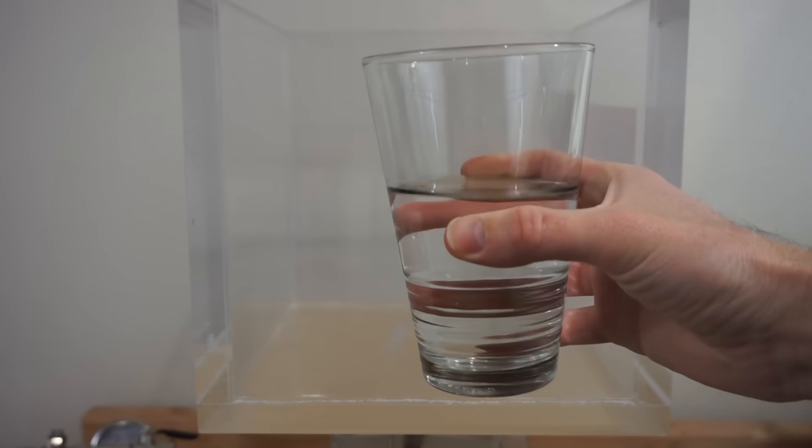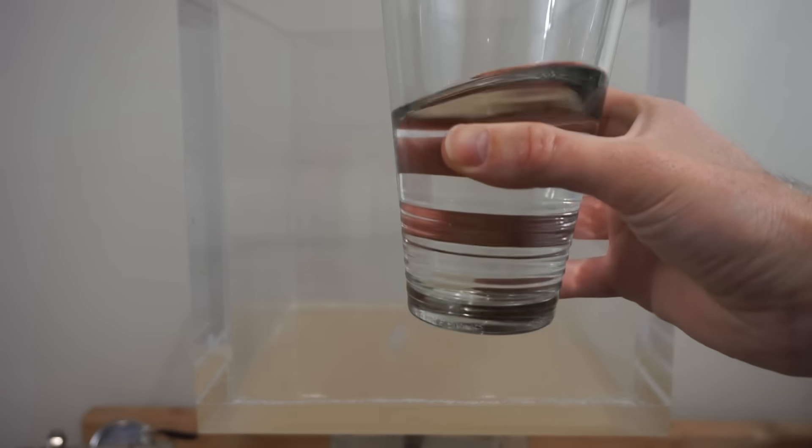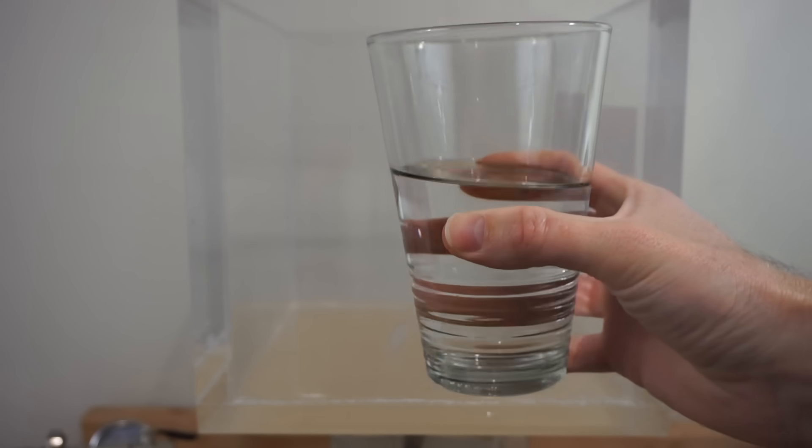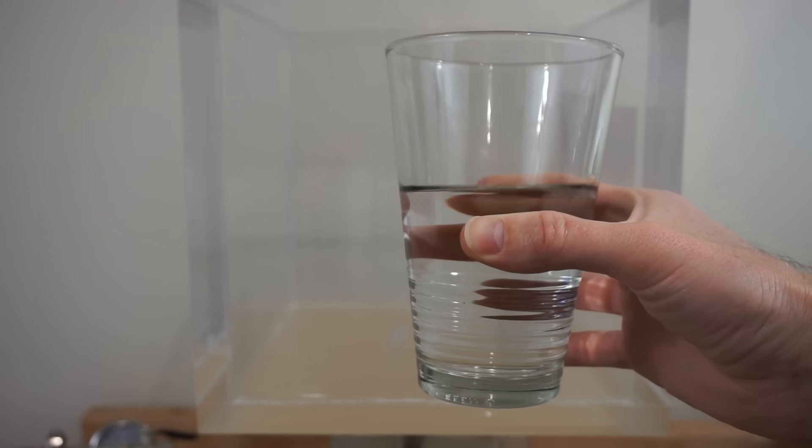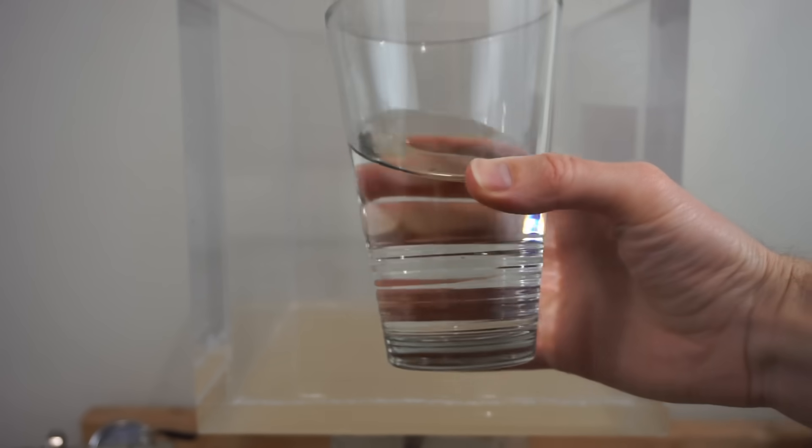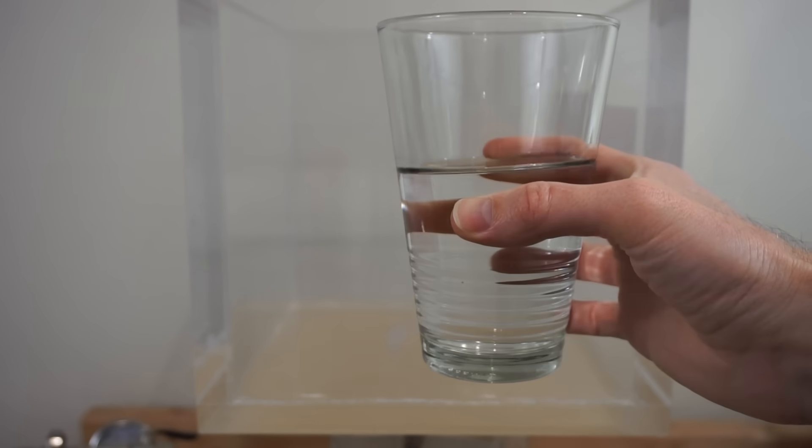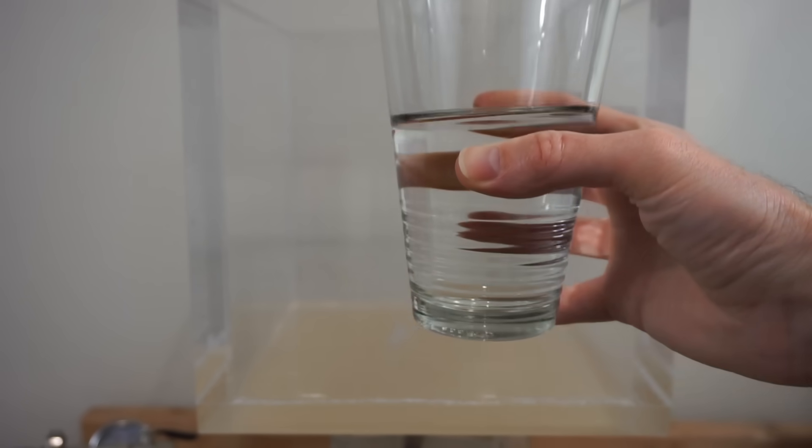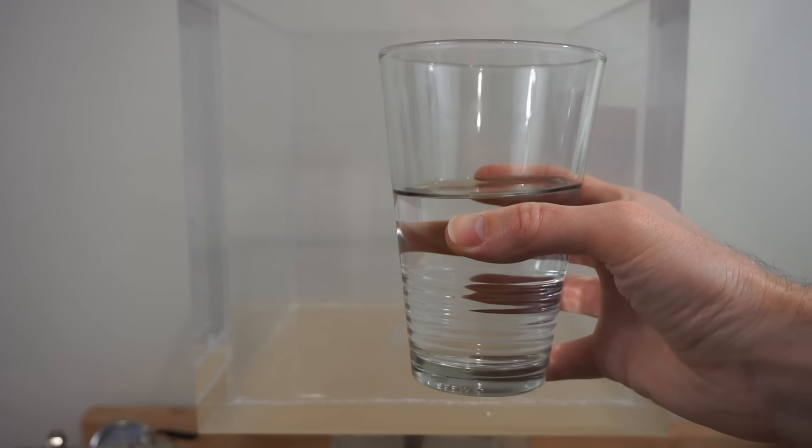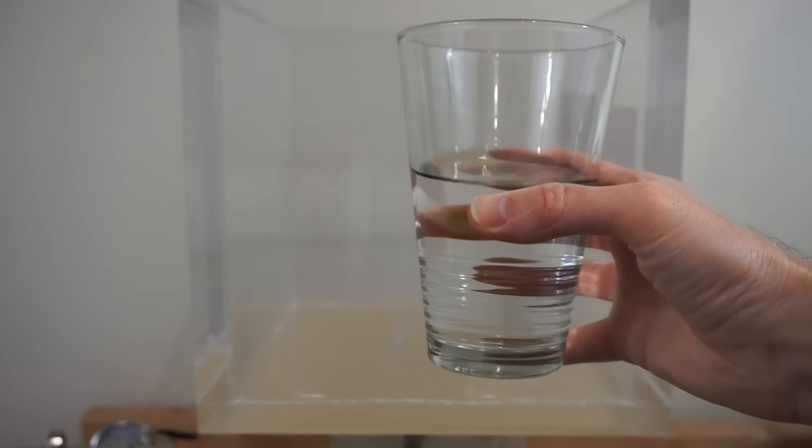So ever since I started doing this vacuum chamber stuff, I would say the number one question I get is questions about the reason that liquids boil in a vacuum chamber. So I want to address some of the main questions that I've seen about water boiling in a vacuum chamber: why it boils, what are the bubbles that you see, what are the bubbles made out of, and what's happening there.